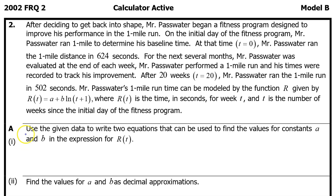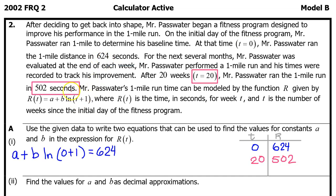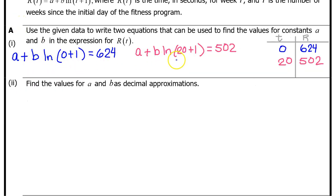Part A(i). Use the given data to write two equations that can be used to find the values for constants a and b in the expression for R(t). Each input-output pair can be used to write an equation. You get the first equation by plugging in 0 for t and setting it equal to 624. We get the second equation by plugging in 20 for t and setting it equal to 502.